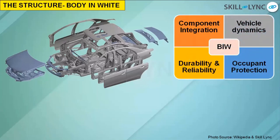The functions of the body in white include component integration — almost all components such as suspension, chassis, engine, steering, seat, roof, and glasses are mounted into the body in white structure. This structure is also very important for vehicle dynamics — torsional stiffness and bending stiffness of the vehicle — and how it affects braking performance and cornering performance. This is the base of the overall vehicle.